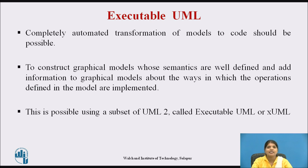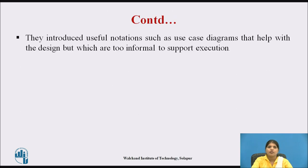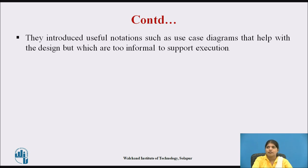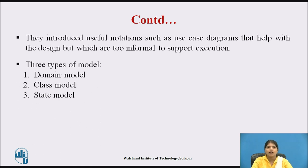UML was designed as a language for supporting and documenting software design, not as a programming language. They introduced useful notations such as use case diagrams that help with the design but which are too informal to support execution. Executable UML uses three types of model: first, domain model; then class model; and third, state model associated with each class.